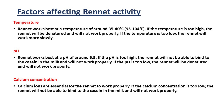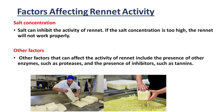When considering pH, rennet works best at a pH of around 6.5. If the pH is too high, the rennet will not be able to bind to the casein in the milk and will not work properly. Calcium ions are essential for the rennet to work properly — if the calcium concentration is too low, the rennet will not be able to bind to the casein. Salt can also inhibit the activity of rennet; if the salt concentration is too high, the rennet will not work properly. Other factors include the presence of other enzymes such as proteases and inhibitors such as tannins.